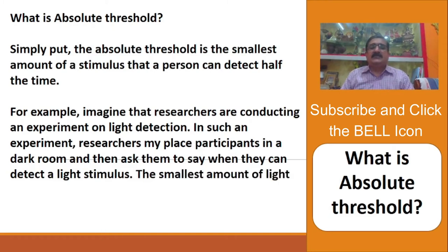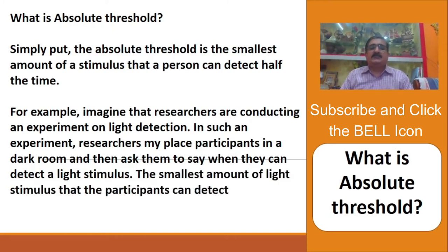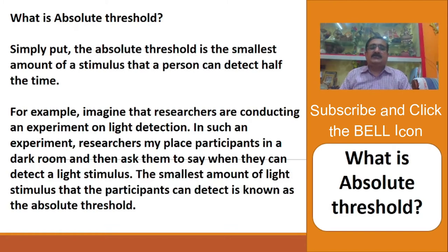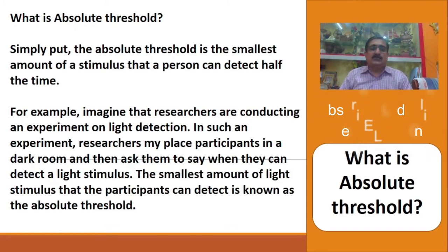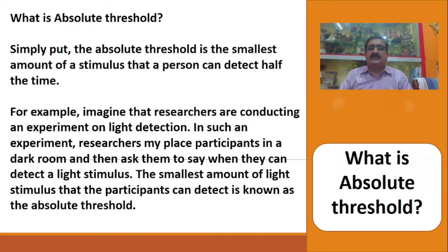For example, imagine that researchers are conducting an experiment on light detection. In such an experiment, researchers may place participants in a dark room and then ask them to say when they can detect a light stimulus. The smallest amount of light stimulus that the participants can detect is known as the absolute threshold.